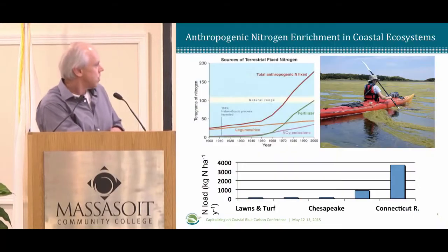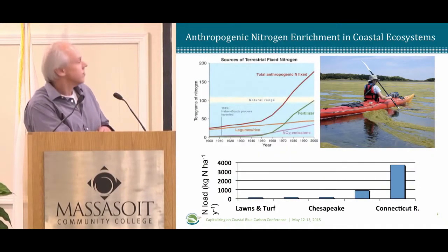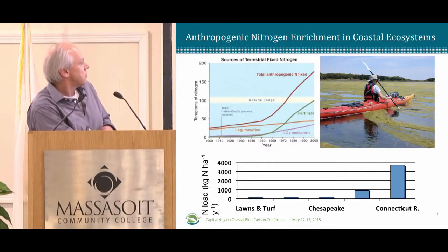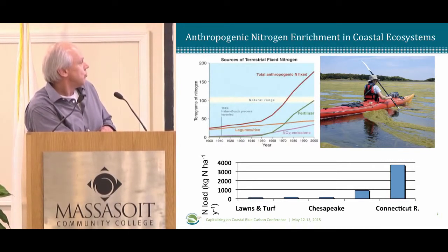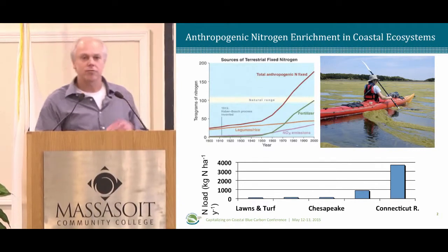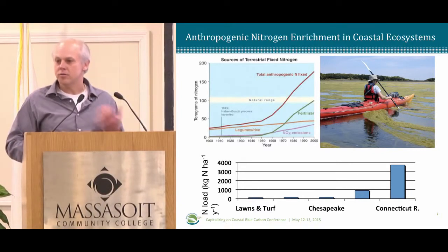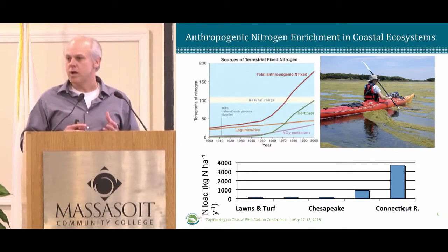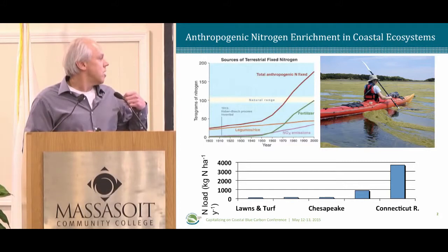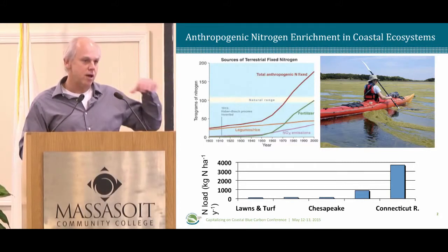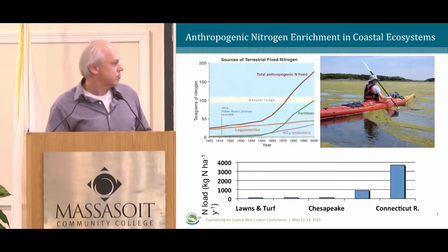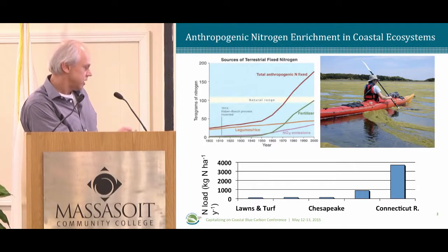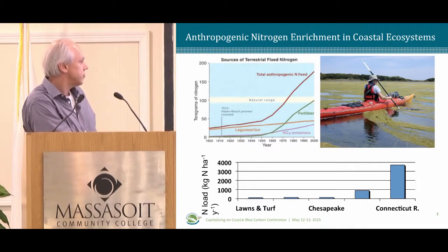Tom already showed us one graph from Jim Galloway, and I have another one here. Over the past hundred years or so, we've more than doubled the global rate of fixed nitrogen supply to ecosystems. But that nitrogen isn't evenly distributed around the globe, and because of their position downstream and down-gradient from intense human activity, our rivers and estuaries tend to get a pretty large supply of that nitrogen.